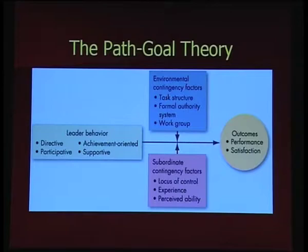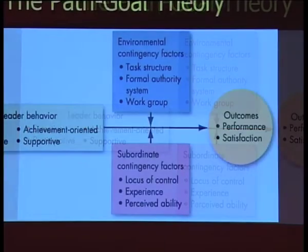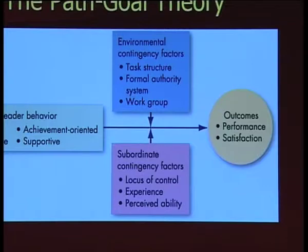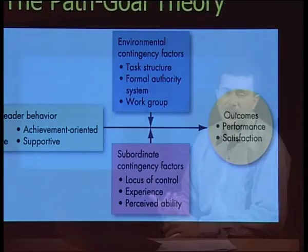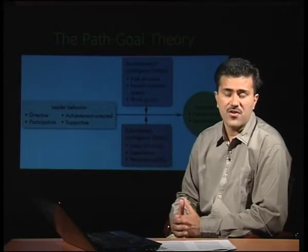With the help of a diagram, let us study Path-Goal Theory. At the first level we have four different leadership styles: directive, achievement-oriented, participative, and supportive. With the help of this leader behavior, the outcomes are satisfaction and performance. If any one of these styles is practiced by a leader, we move to the outcome of satisfaction and performance.